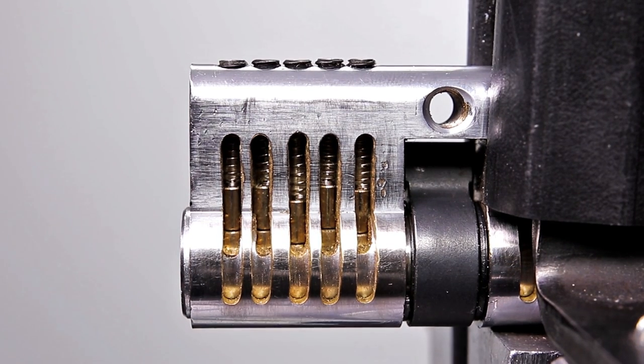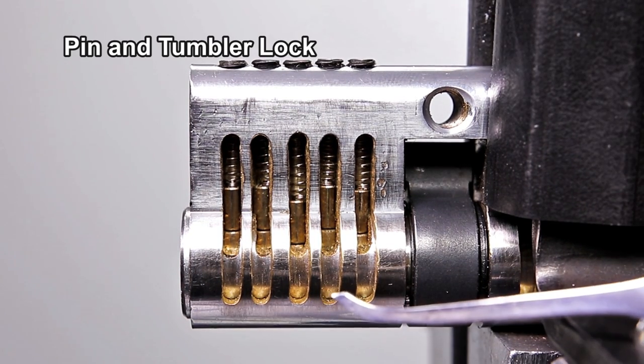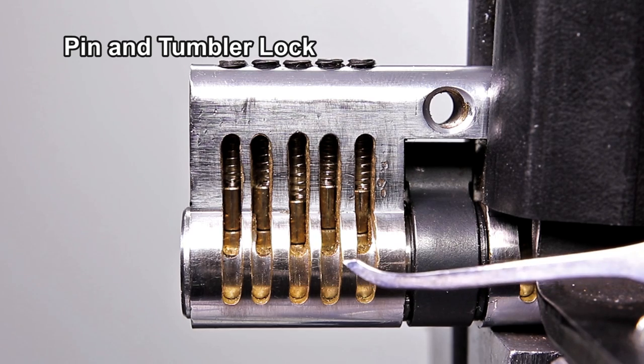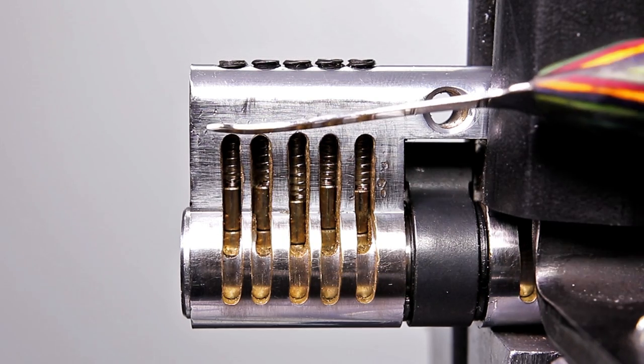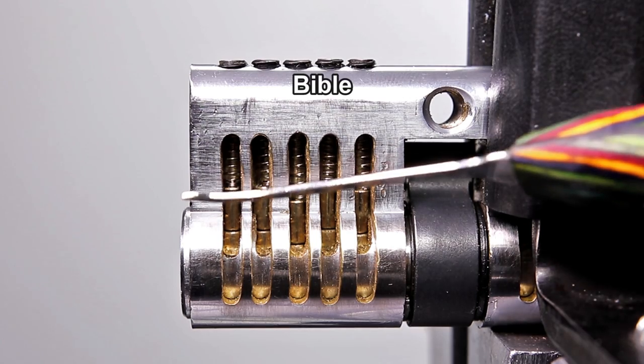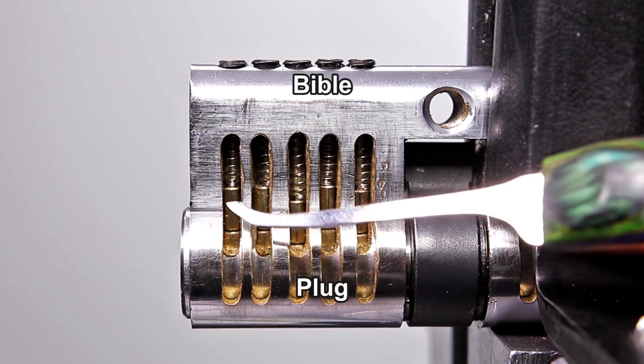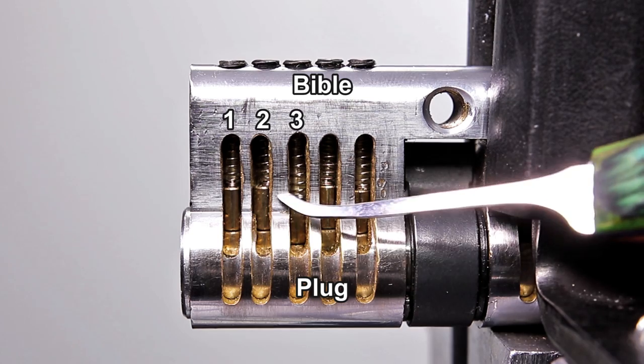The lock that you see in front of you is called a pin and tumbler lock and is one of the most common locks that you'll run into. How a pin and tumbler lock works: it's divided into two parts. The top portion is called the bible and the bottom portion is called the plug, and you can see that there are five chambers—one, two, three, four, five.